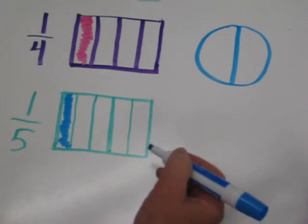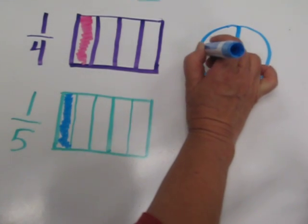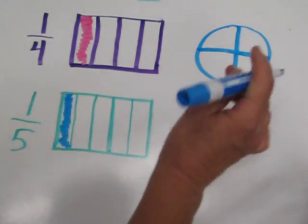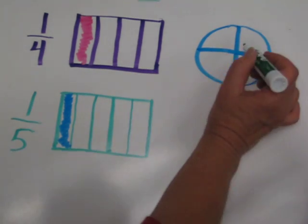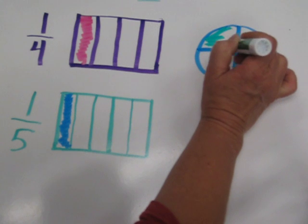Now we have two pretty equal parts, and we need four, so we're going to go there again. And then we will color in one of those four parts.